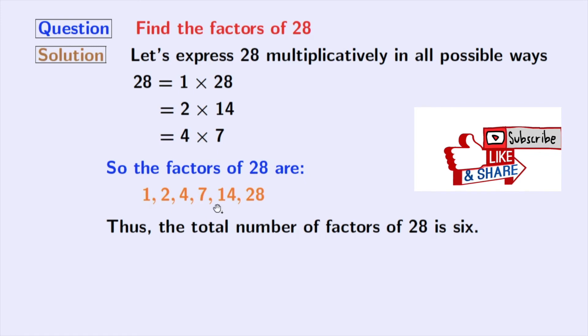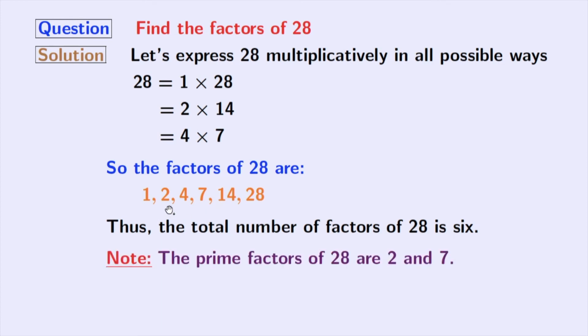Now, have a look at these factors. Here, 2 and 7 are prime numbers. Because these two numbers do not have any divisor other than 1 and that number itself. So we can say that the prime factors of 28 are 2 and 7.